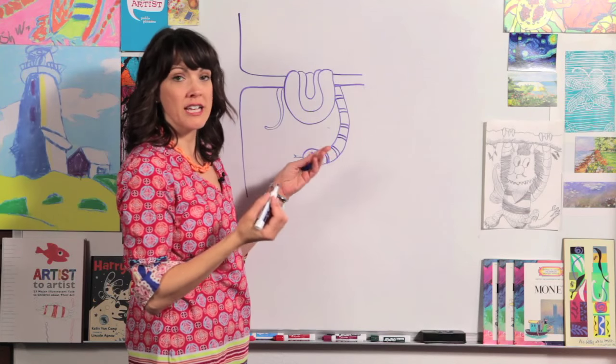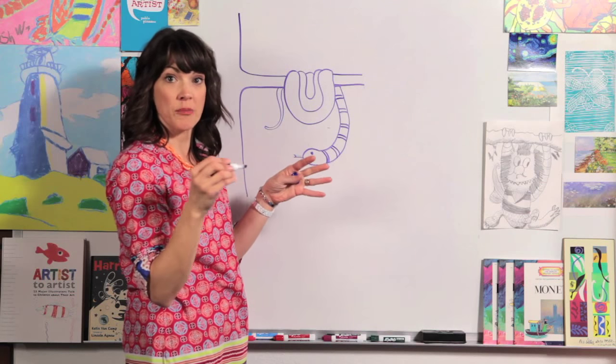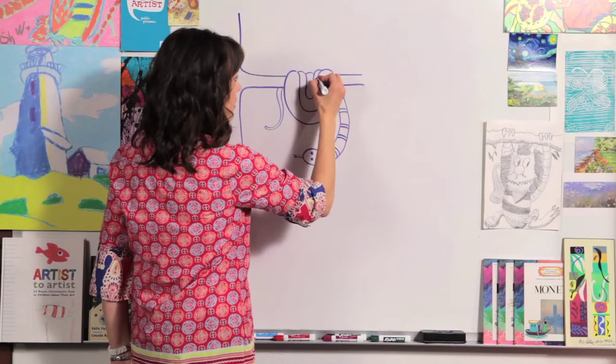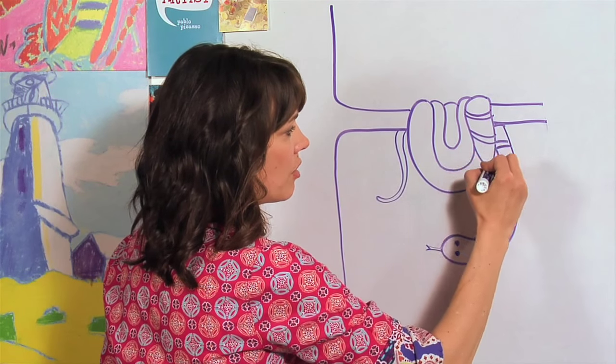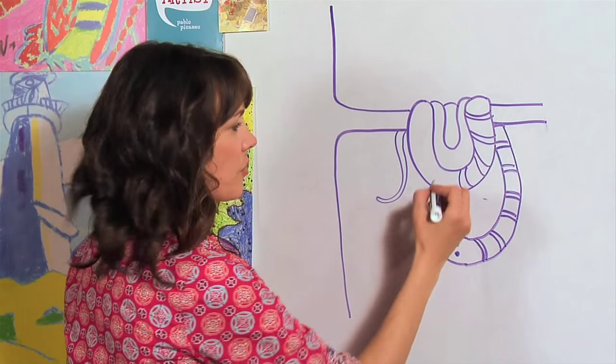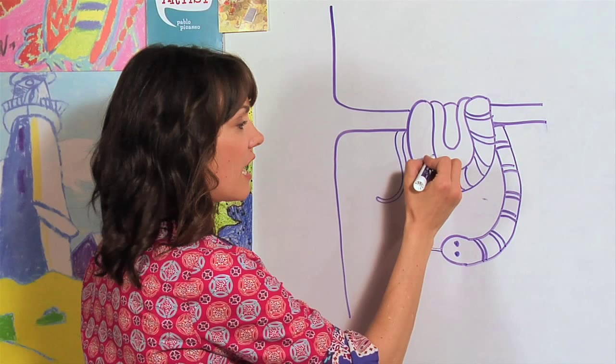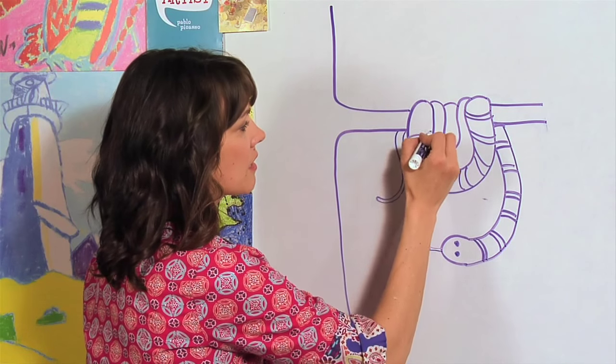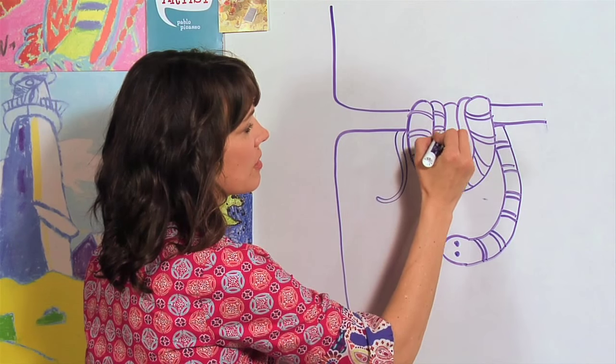Now remember when we're drawing snakes we don't draw straight lines if you're doing stripes. You have to draw him curved because he's round. And as you come around this corner your stripes have to come around too. So that can be a little bit tricky. But if you practice you'll get really good at it. And some stripes in the middle.